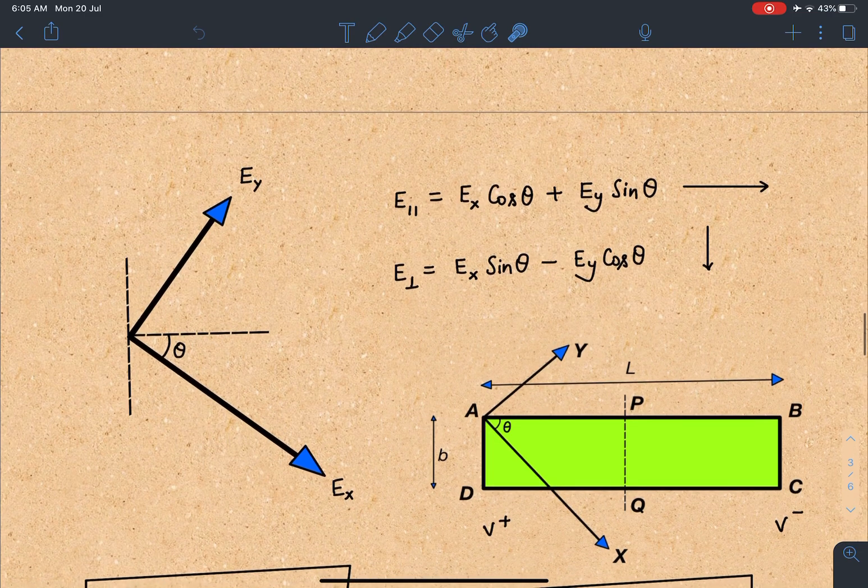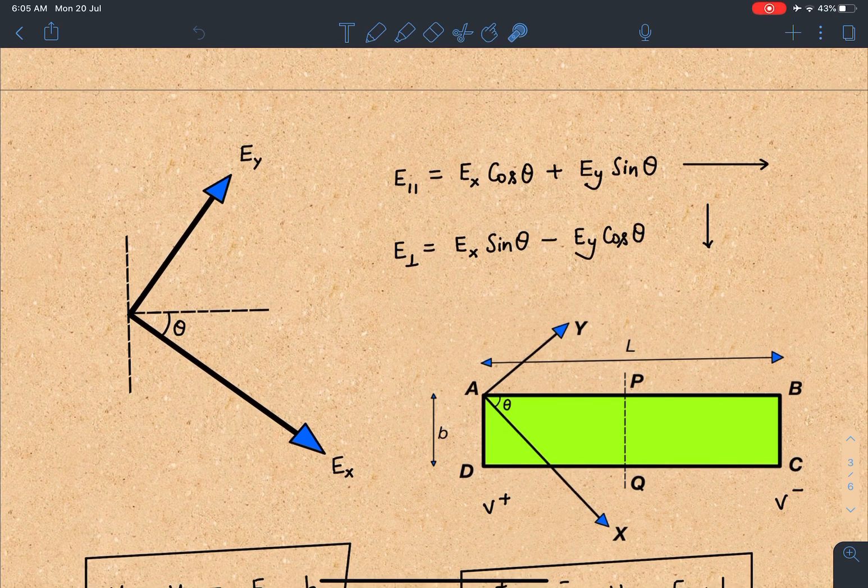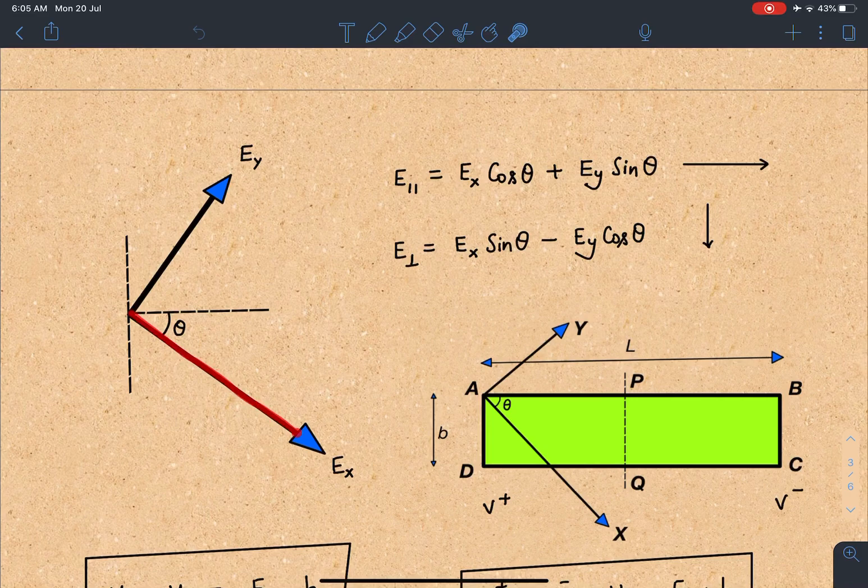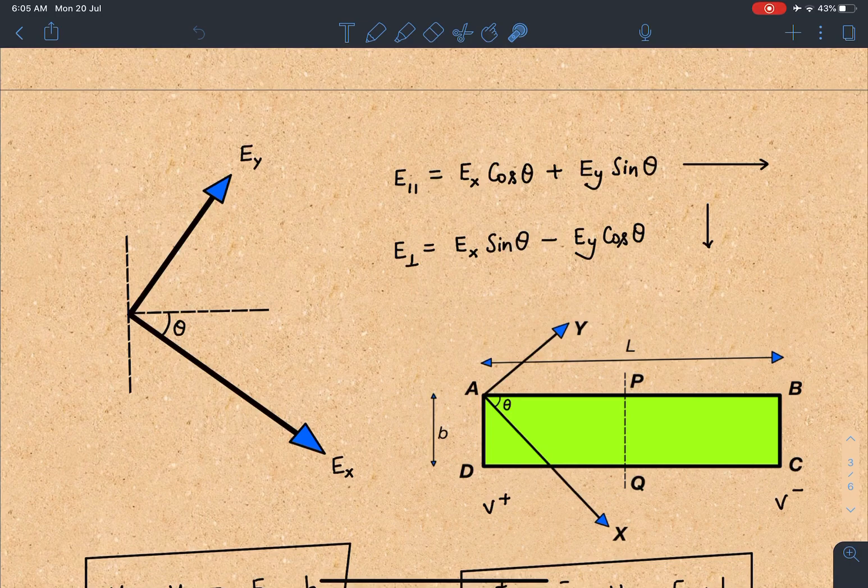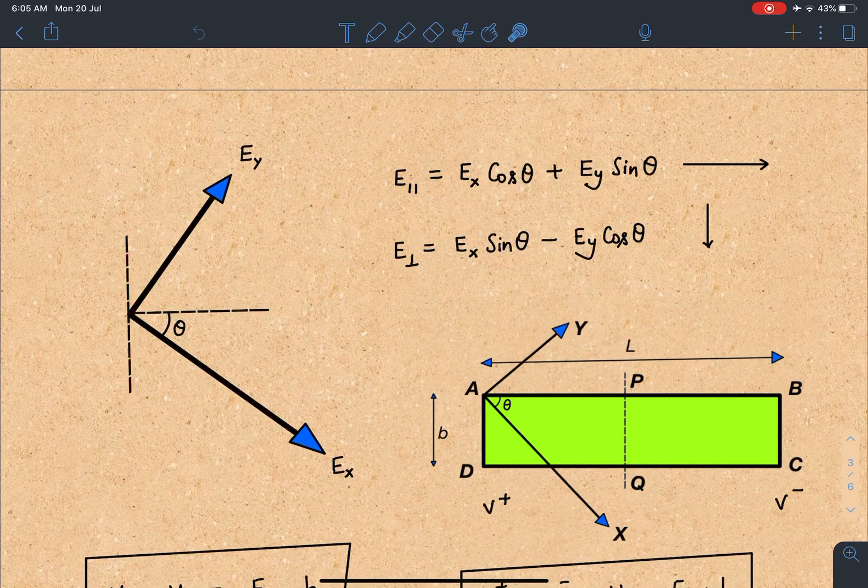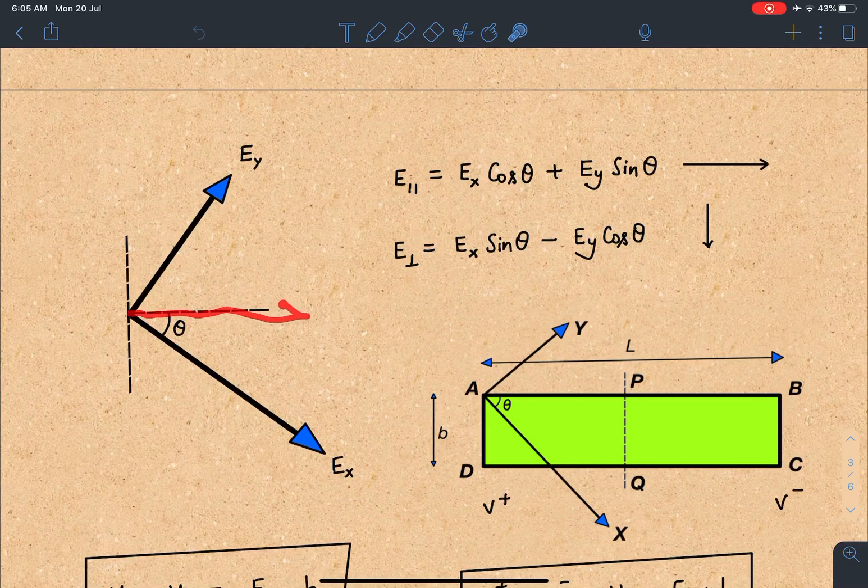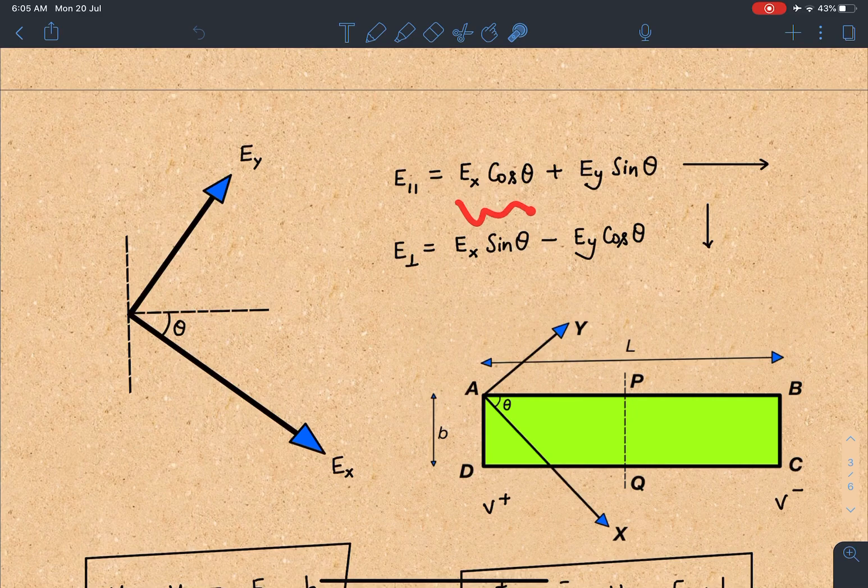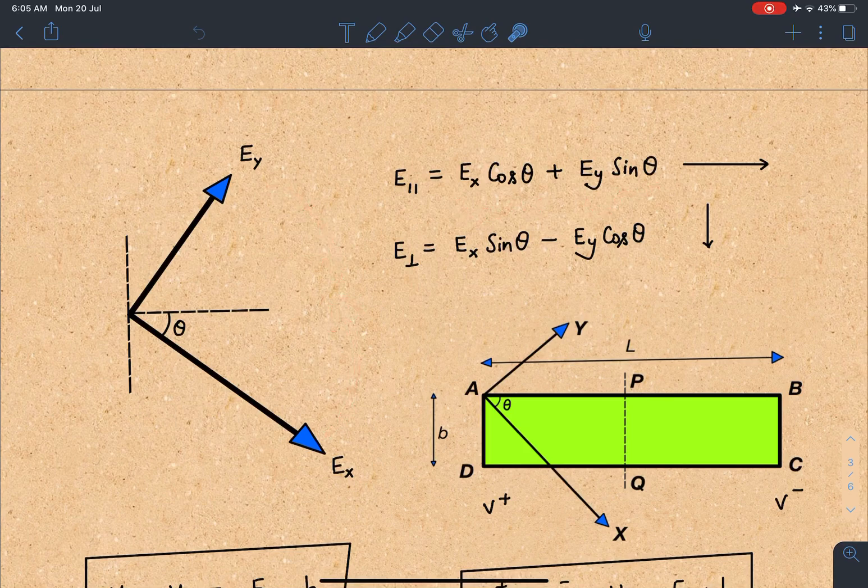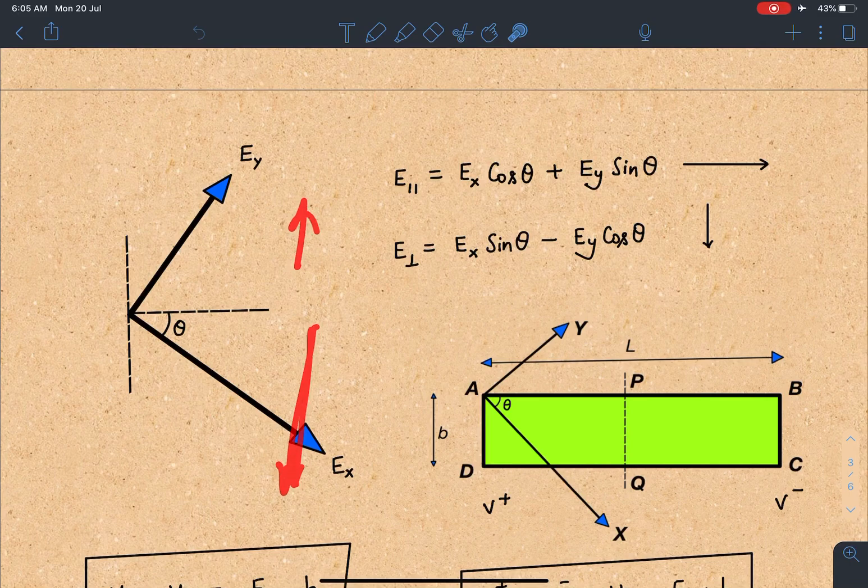If you look at the electric fields created by these resistivities or current densities, this field is E_x and this field is E_y. Now we can divide this into two components: one is parallel to the strip and another one is perpendicular to the strip. So parallel to the strip, this electric field component E_parallel = E_x cos θ + E_y sin θ. Similarly E_perpendicular = E_x sin θ - E_y cos θ.